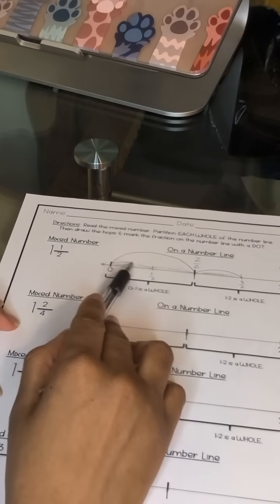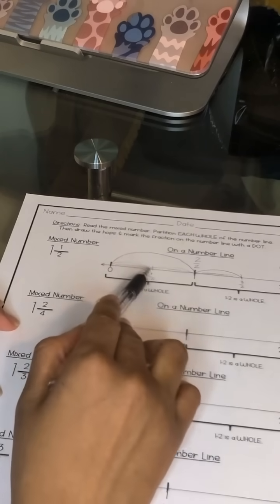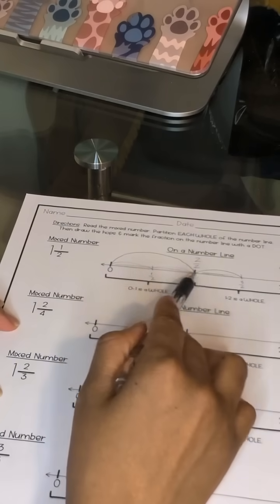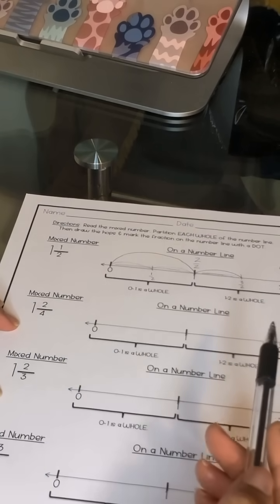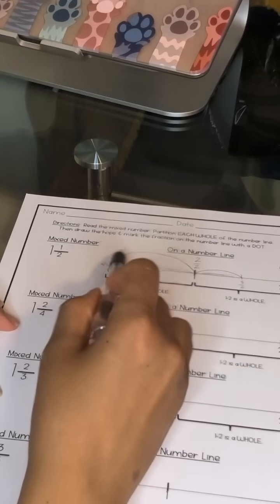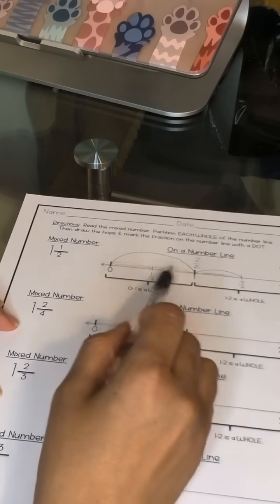But if we're jumping by halves, this is a half, this is a half, and this next jump is a half. So this one whole jump has two halves in it.